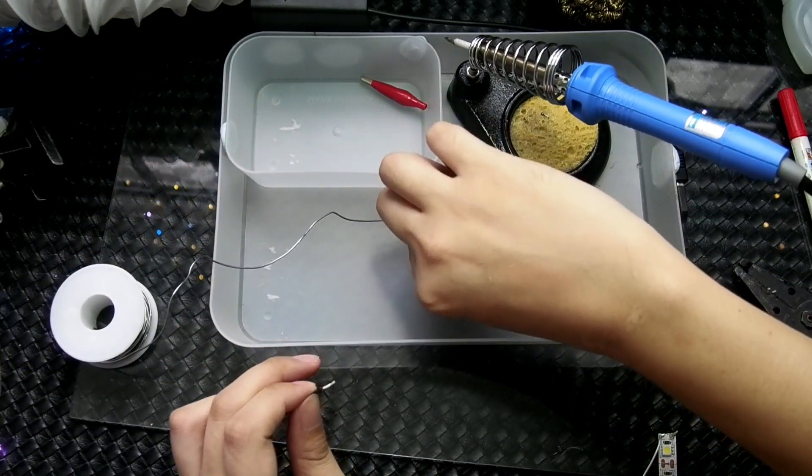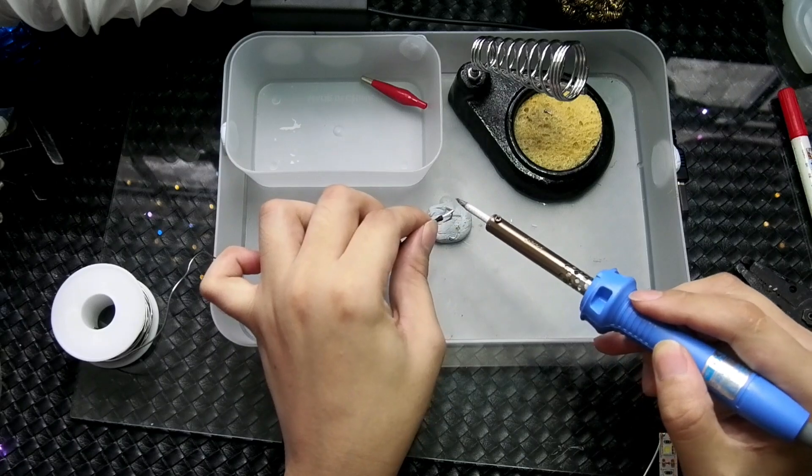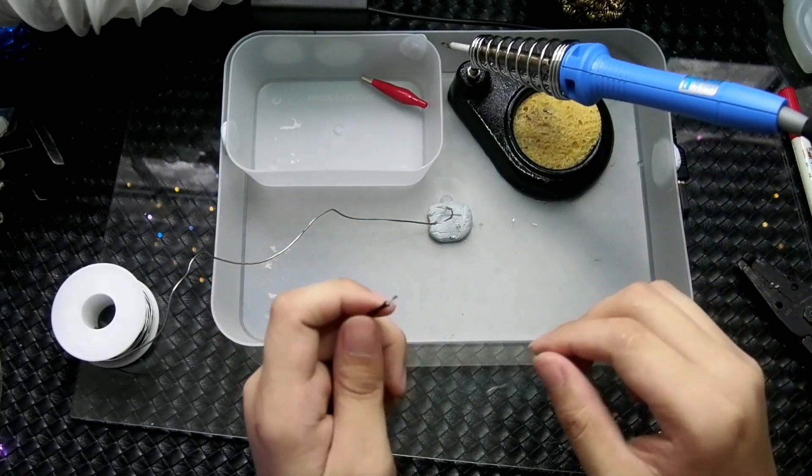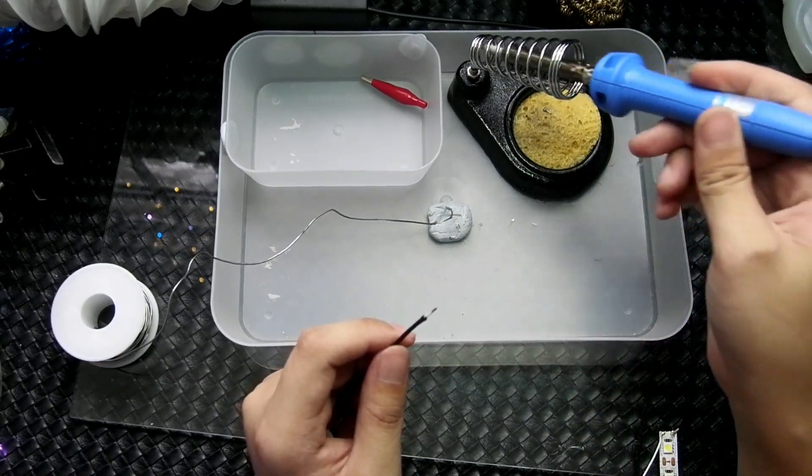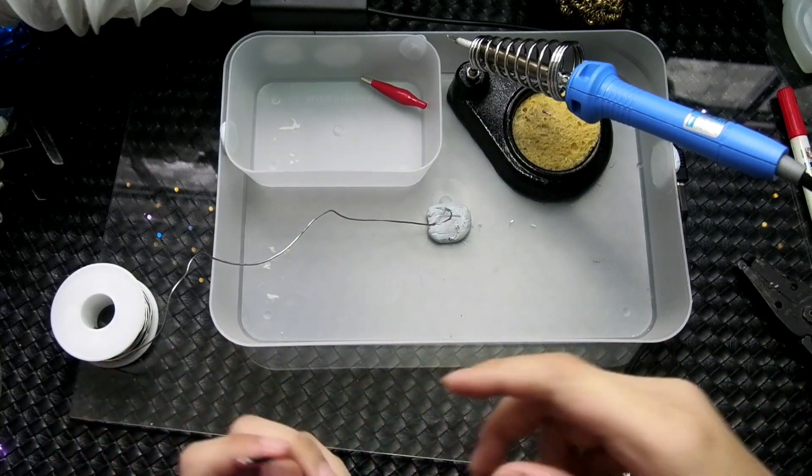We will strip the ends up here and we'll tin it. So next we will prepare the crocodile clip.